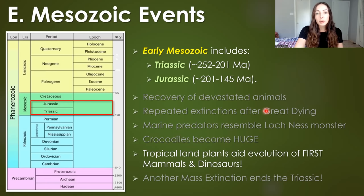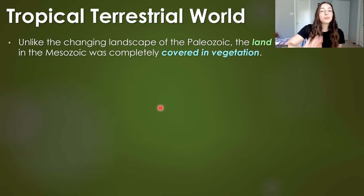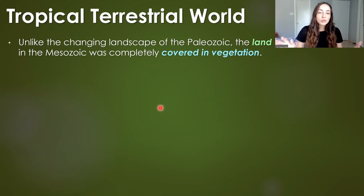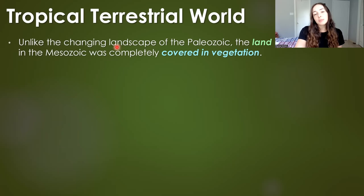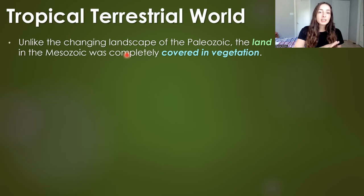I have a whole other video talking about marine life during those two periods and a whole other video about the late Triassic extinction. We'll start with vegetation and move our way to animals, because the vegetation really laid the groundwork for animal evolution on land during this time interval. Unlike the changing landscape of the Paleozoic era, the land of the Mesozoic was completely covered in vegetation.